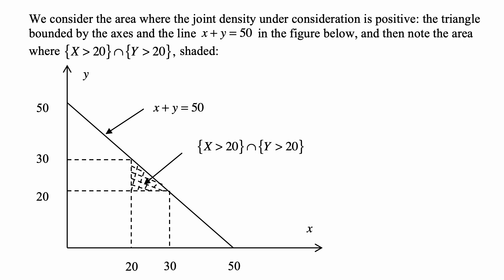The area where x is more than 20 and y is more than 20 is the shaded triangle here, for x between 20 and 30, y between 20 and 30, and under the line where x + y equals 50. We need to take the double integral of the joint density over this triangle.